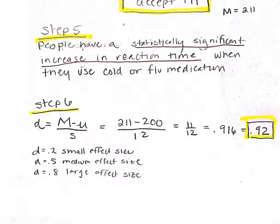The equation for Cohen's d is: d = (M − μ) / sample standard deviation. We take out n because sample size can manipulate effect size. So we have: sample mean 211 minus population mean 200, divided by 12. That's 11 divided by 12, which equals 0.916, or rounded, 0.92. This means we have a large effect size. So that's it for this problem — I hope that was helpful, and I'll talk to you soon.